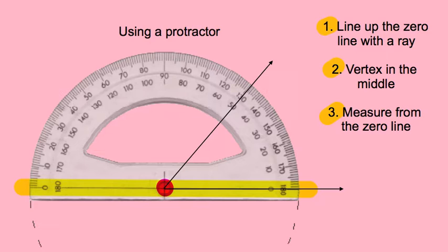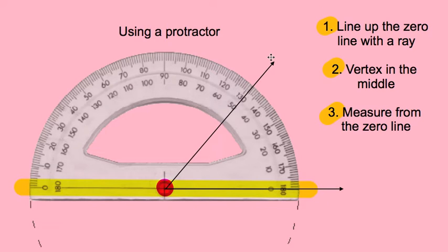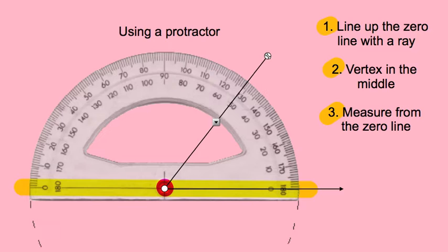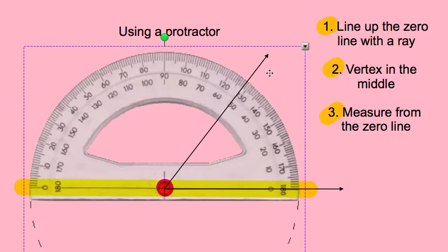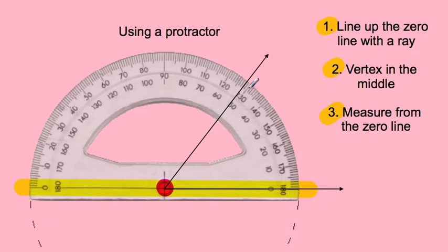Anything in between those fives and tens you're going to have to count. So if it's a little bit past 50 — let's say it's at the next one over — that's 51, and then 52. So that would be a 52-degree line. Again, measuring from the zero.